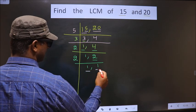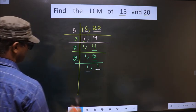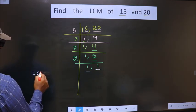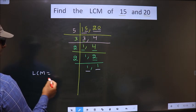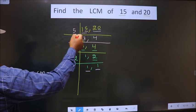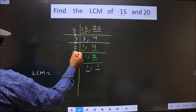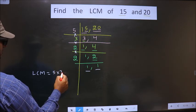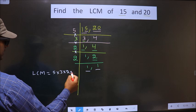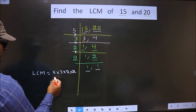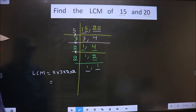So now we got 1 in both places. Now our LCM is the product of these numbers: 5 into 3 into 2 into 2 into 2. So let us multiply all these numbers.